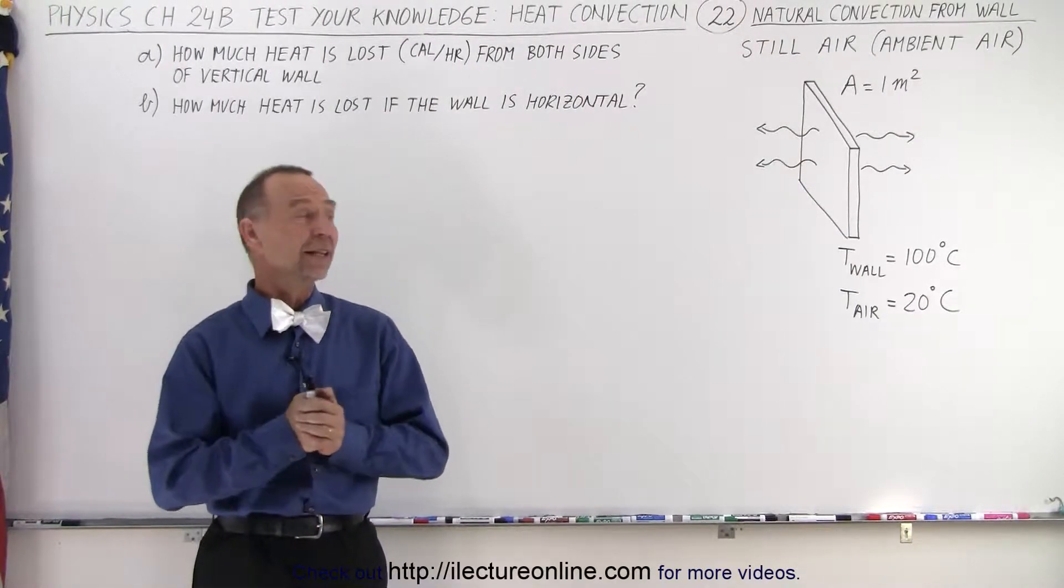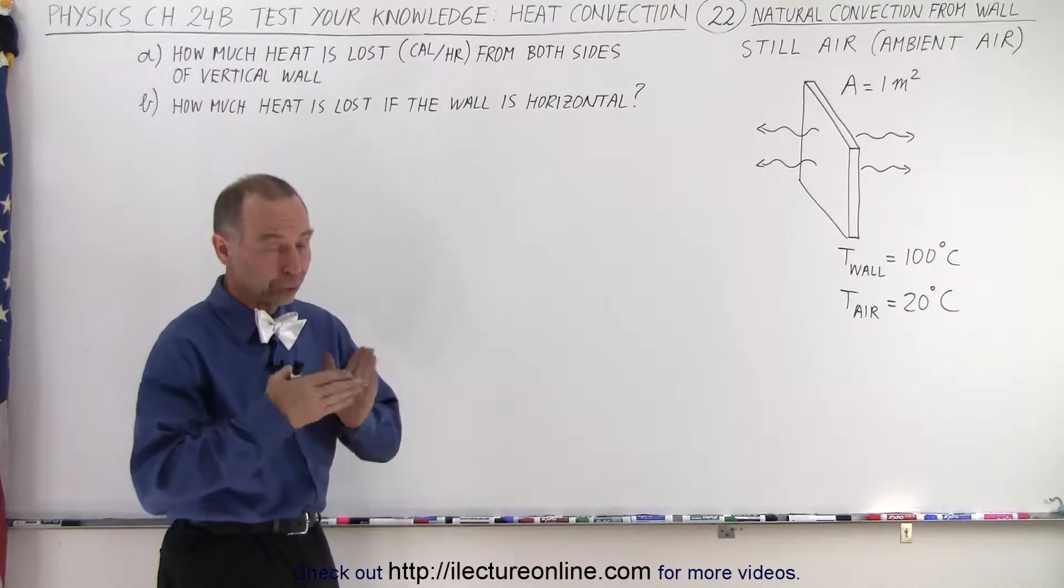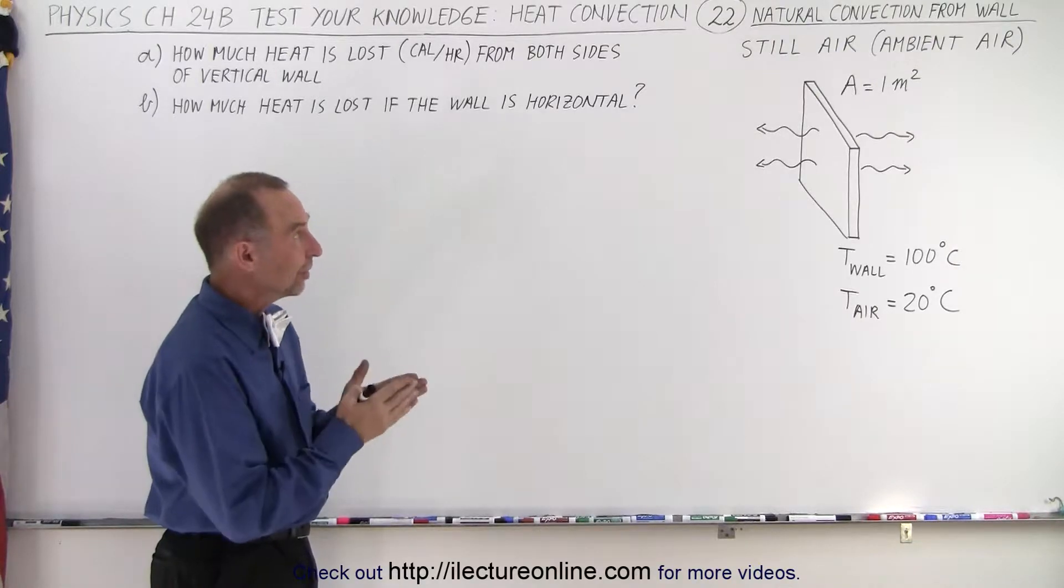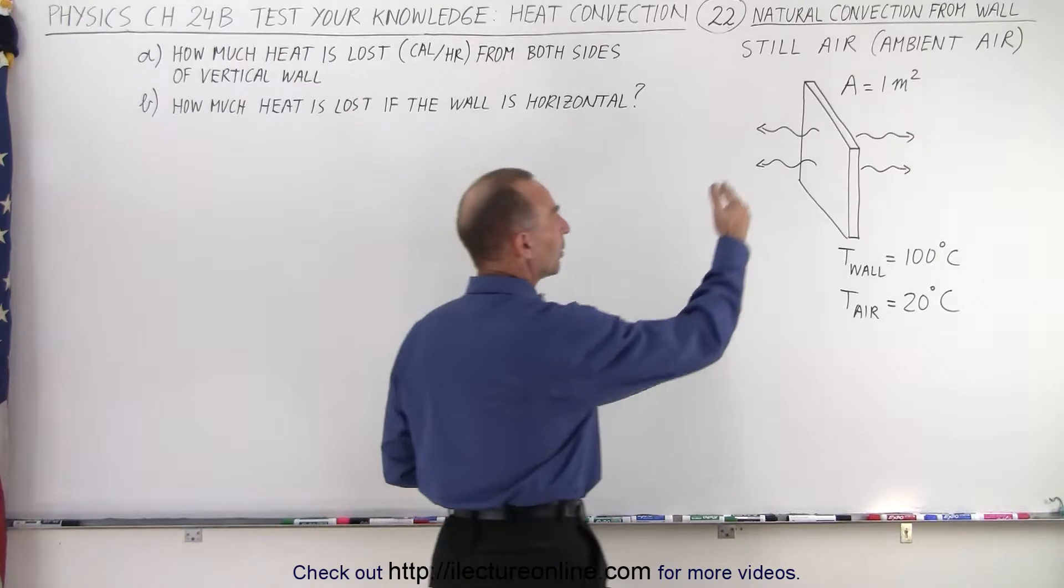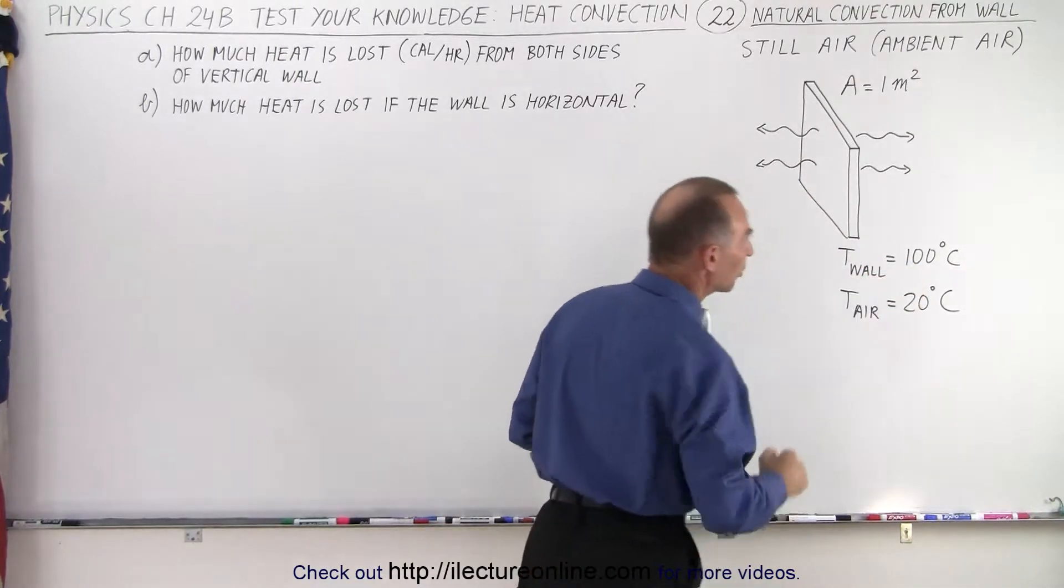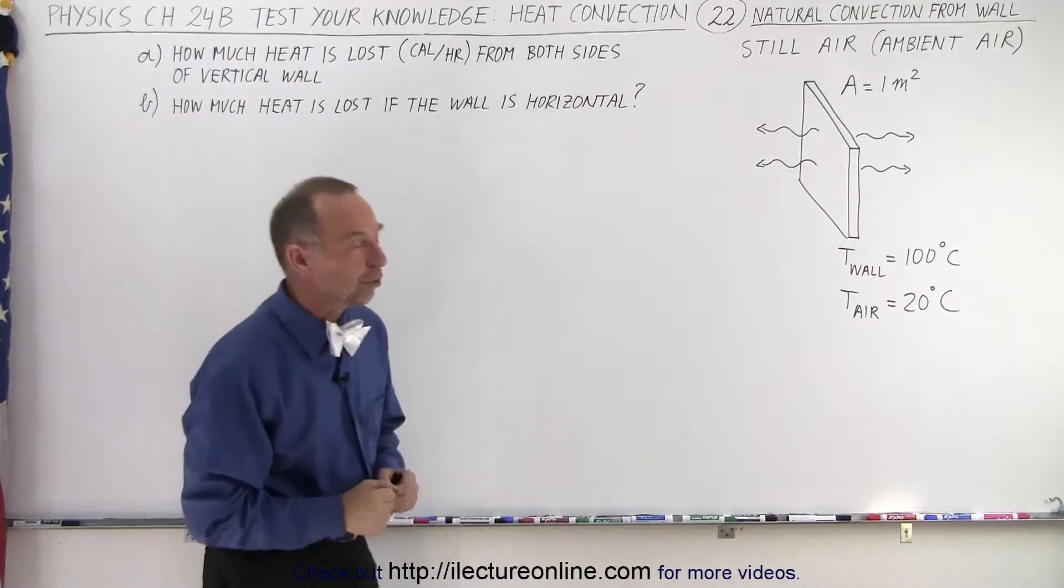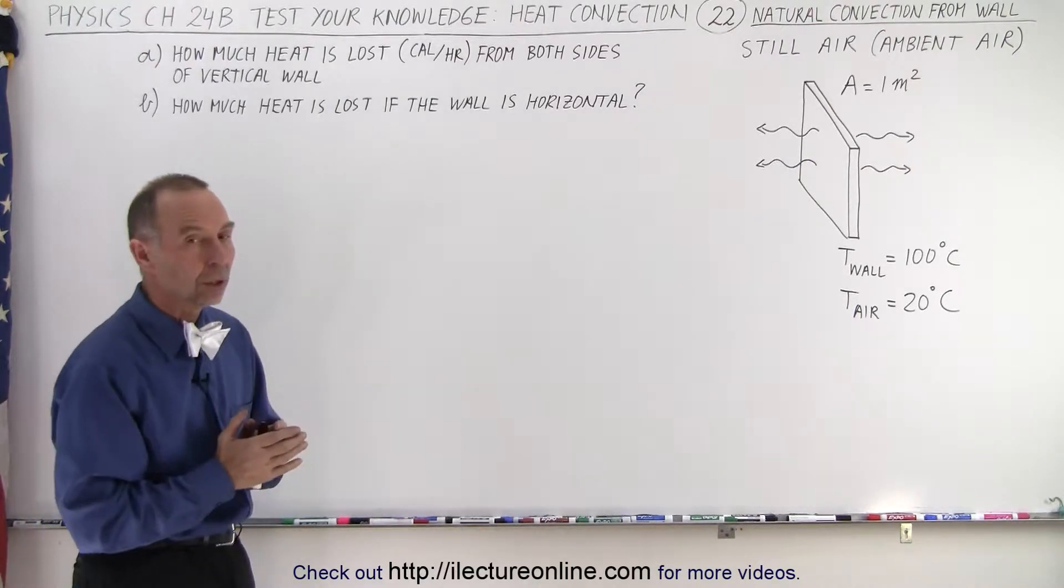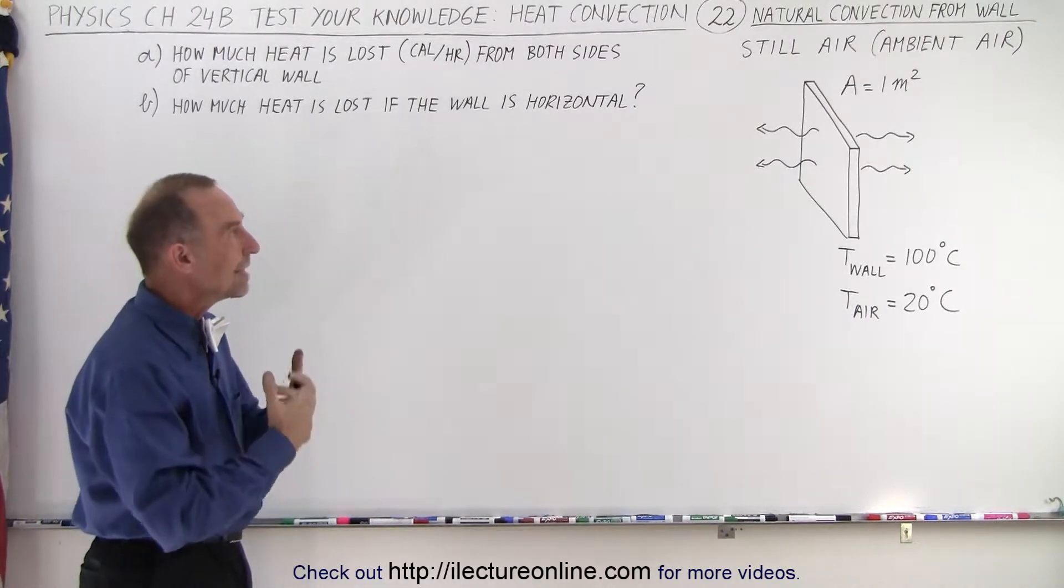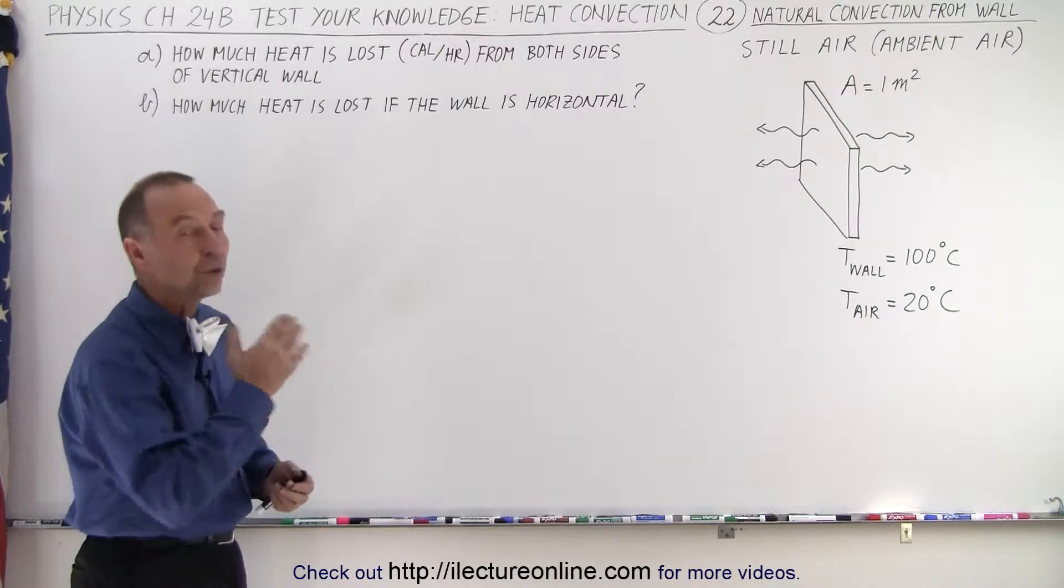Welcome to ElectroOnline. Now let's take a look at a vertical wall in still air or ambient air. The area of the wall is one square meter, the temperature of the wall is 100 degrees centigrade, and the temperature of the air is 20 degrees centigrade. So there's no air being blown onto the wall. What is the heat loss through natural convection from both sides of the wall?